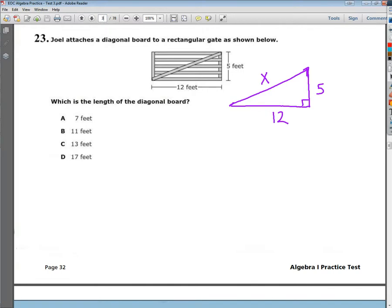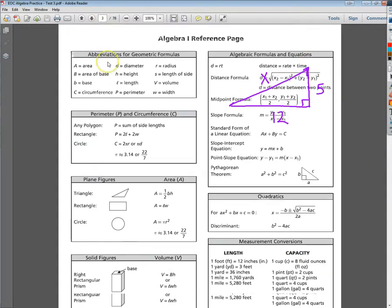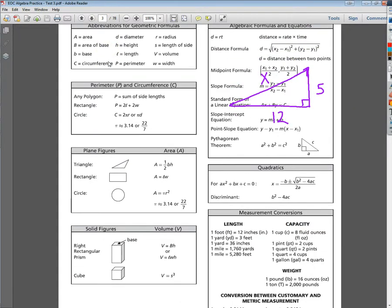So I'm going to go to the formulas page, also a great tool. And I'm going to look for triangles. Well, there's only two of them on the whole thing. One of them is an area formula, which won't tell me anything but how much is inside of it, but I want to know what this board's length is. So the other one is the Pythagorean theorem. It's even got that right angle there.